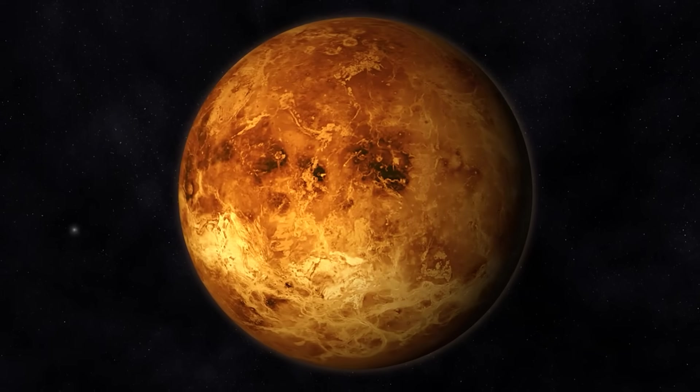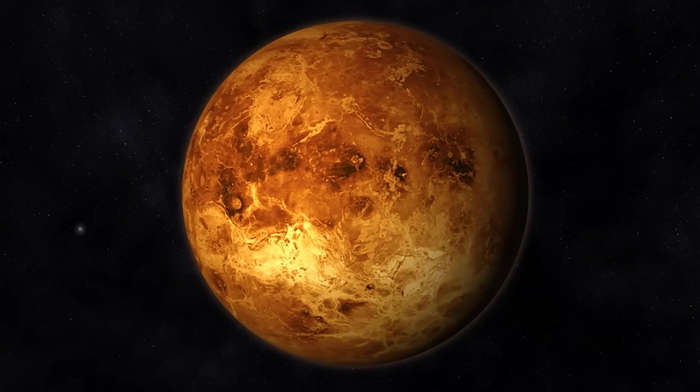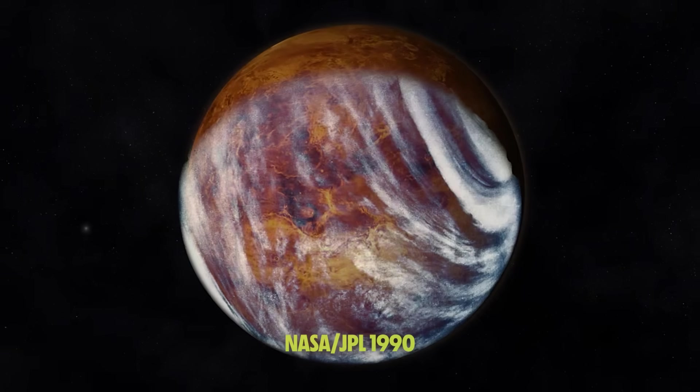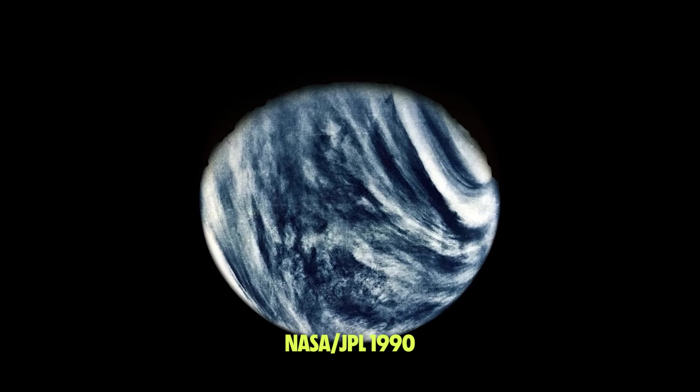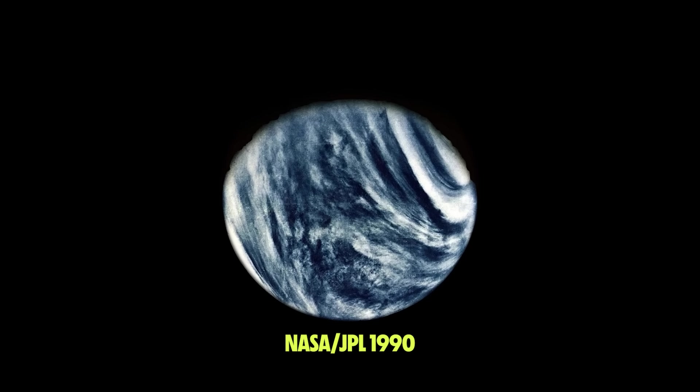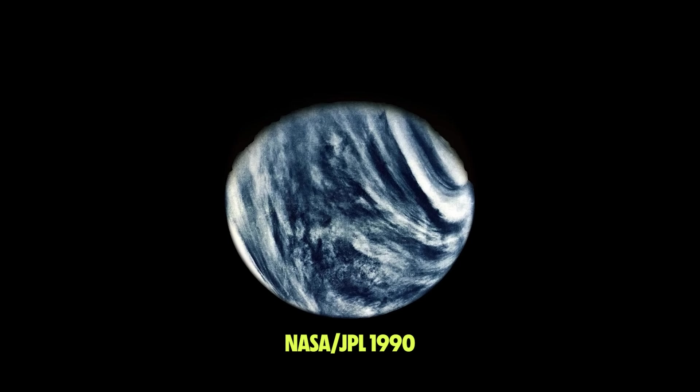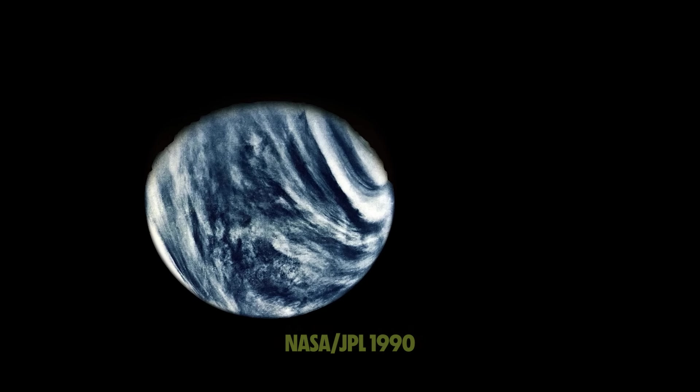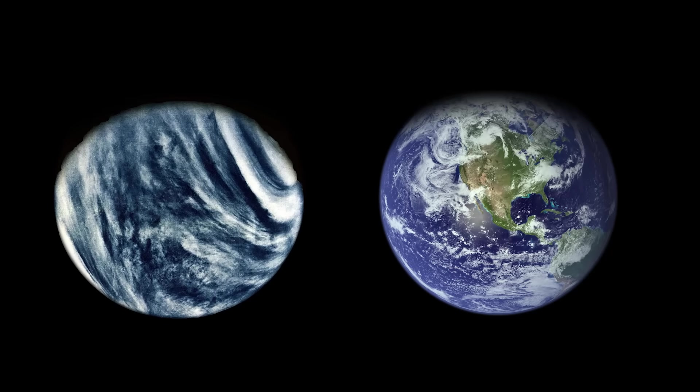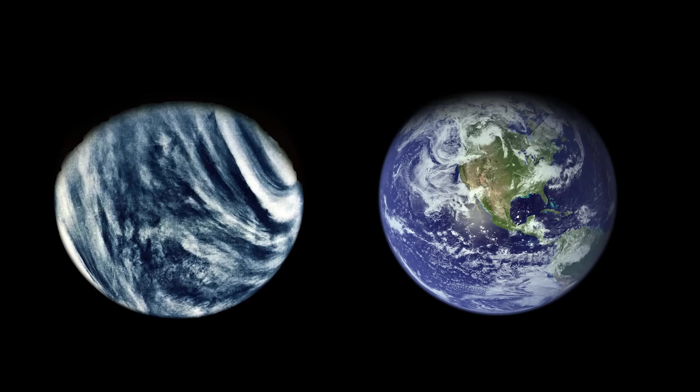But Venus, on the other hand, has always managed to hide its secrets. All that we can see from Earth is an impenetrable cover of thick clouds. Those clouds might obstruct our view, but they also tell us something very important. It means that the planet must have a dense atmosphere, much more similar to Earth than Mars.